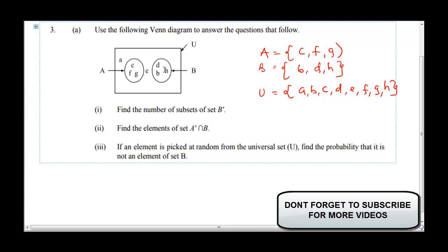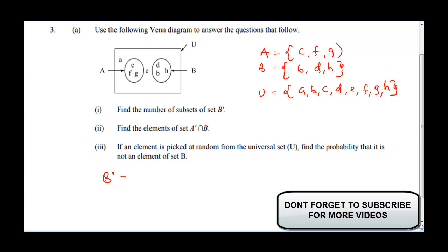The first question says: find the number of subsets of B complement. Now, what do you understand by B complement? B complement are those elements that are not in B but can be found in the universal set. So what are the elements that are not in B but can be found in U?